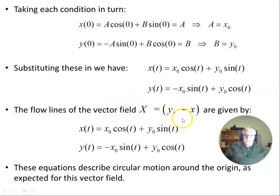The flow lines of the vector field are given by, of this vector field, the flow lines are given by, because remember, we need the tangent to these. So x equals dy/dt and y equals minus dx/dt here. And so we have x of t is this object, y of t is this object here. You can see these equations describe circular motion around the origin, as expected for this vector field.